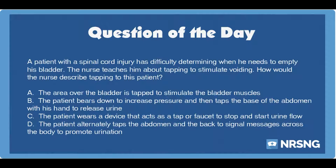The correct answer is A. The area over the bladder is tapped to stimulate the bladder muscles. The patient with a spinal cord injury may be unable to control urine flow if he has little to no sensation in the bladder that tells the brain when it is time to empty the bladder. The nurse may teach the patient about some techniques that can stimulate urine flow. Tapping involves lightly tapping the area over the bladder with the fingertips to stimulate detrusor muscle contractions.